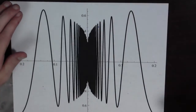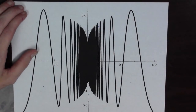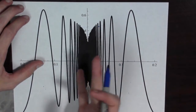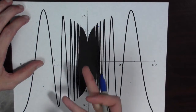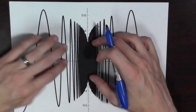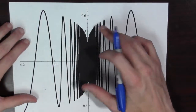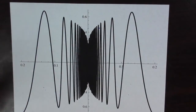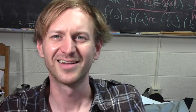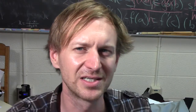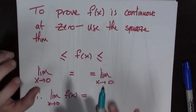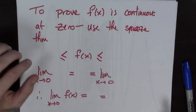Let's see a plot. This looks pretty terrible around 0 — you can see a huge area where the function seems to be oscillating wildly. Is it continuous, though? To prove that f of x is continuous at 0, we're going to use the squeeze theorem again. We need a function that bounds it below and above.